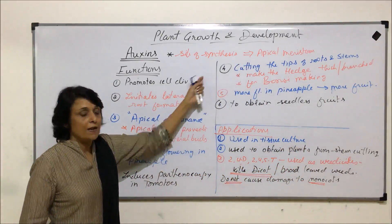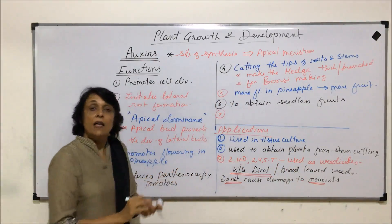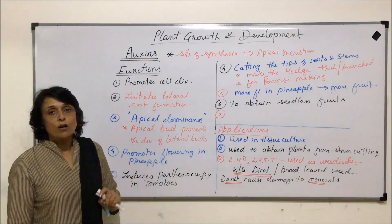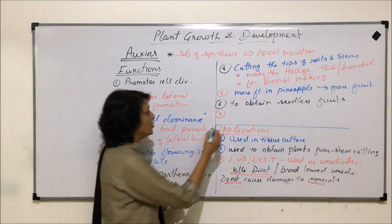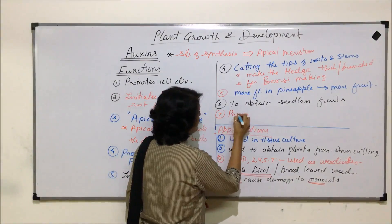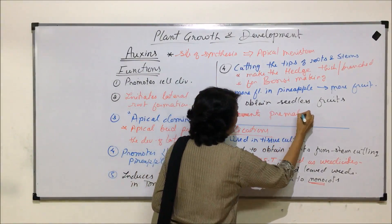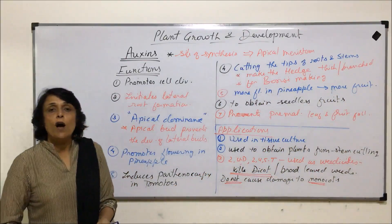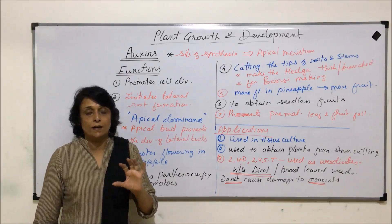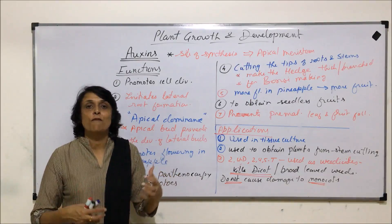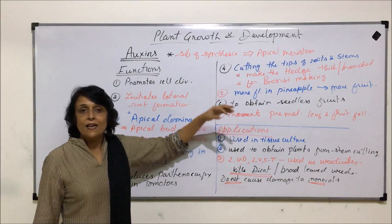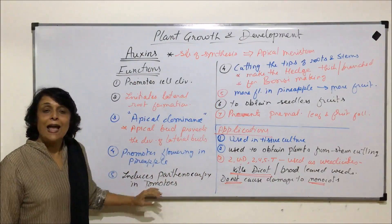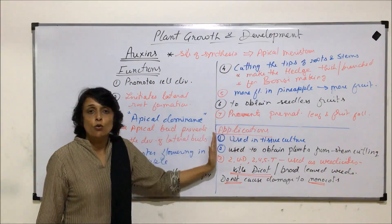Another function is that auxins prevent premature leaf and fruit fall. Auxins can be sprayed on crops when we want to prevent premature leaf fall. In fruiting plants, unripe fruits sometimes fall off early; if this is prevented and fruits are allowed to grow on the plant, productivity will increase. So auxins are applied in agriculture using these functional properties.